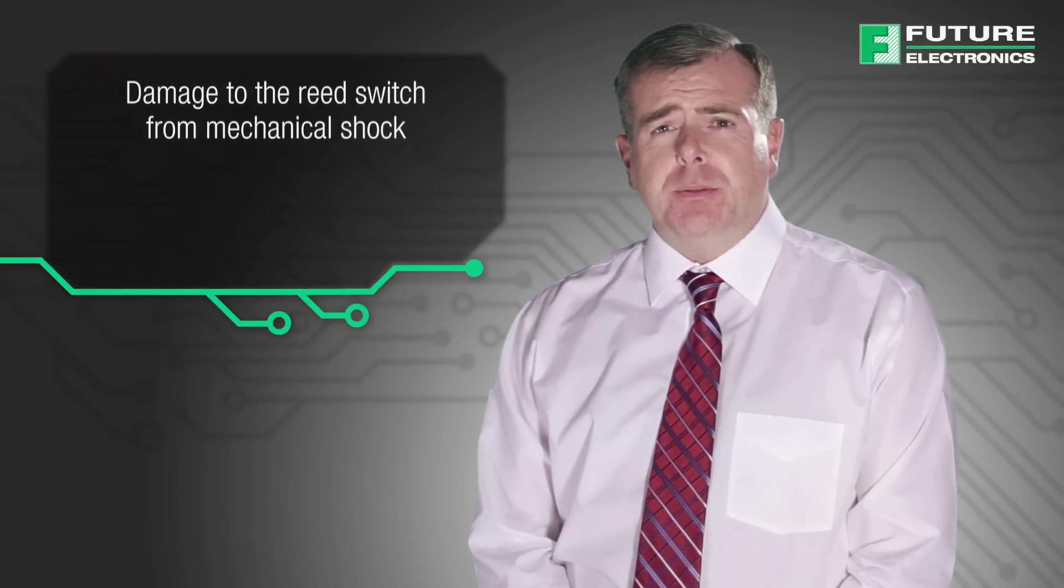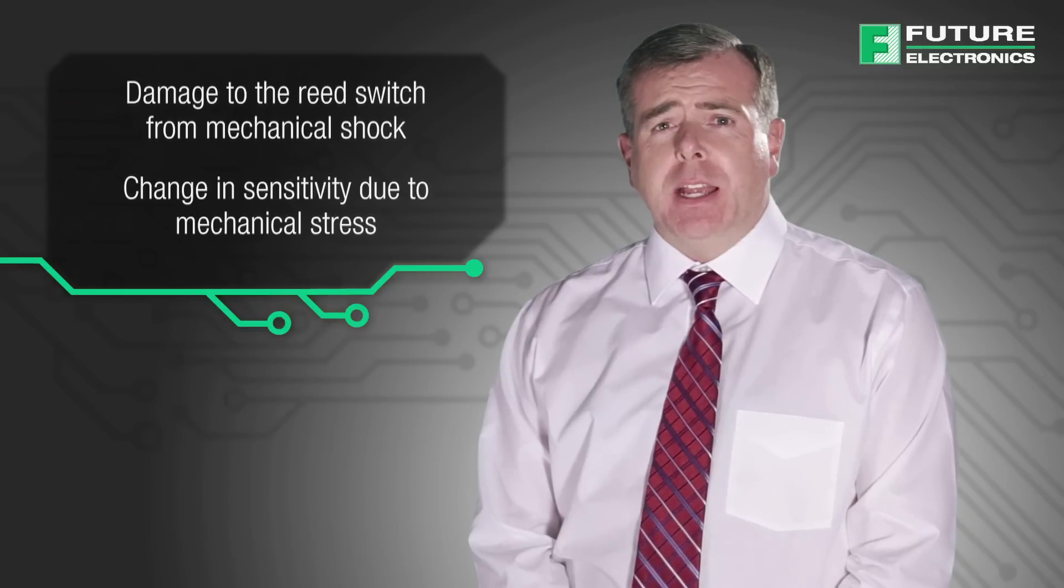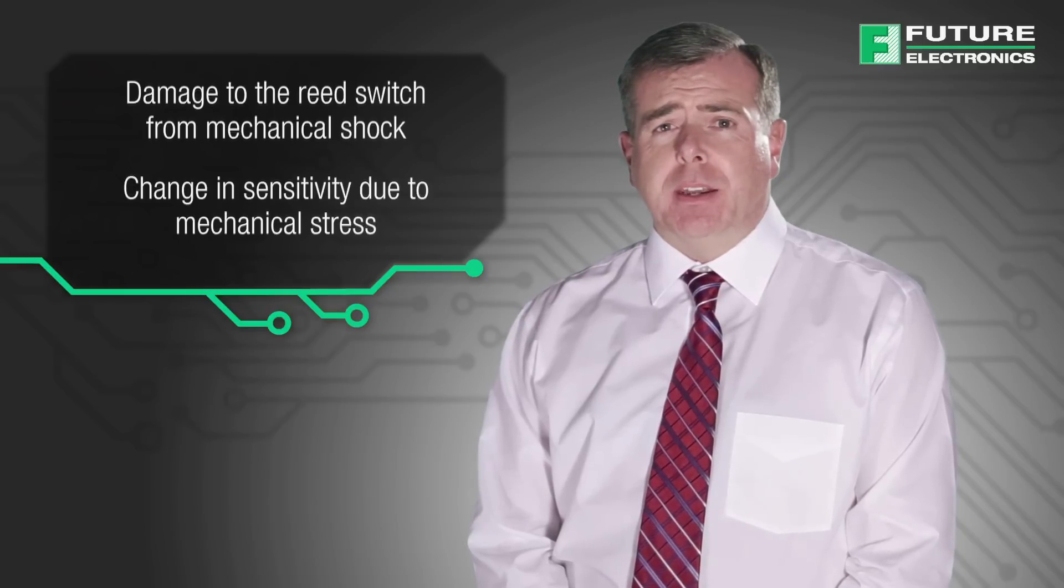The overlap or contact area of the reed is coated with special metals. The nickel-iron leads are tin-plated so they can be soldered. There are several considerations in incorporating a reed switch into a sensor capsule, such as damage from mechanical shock and change in sensitivity due to mechanical stress.